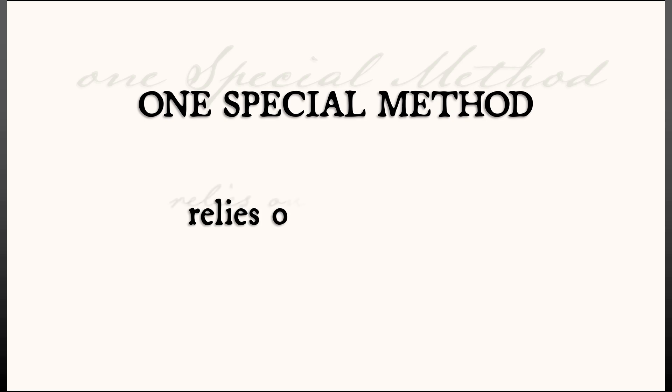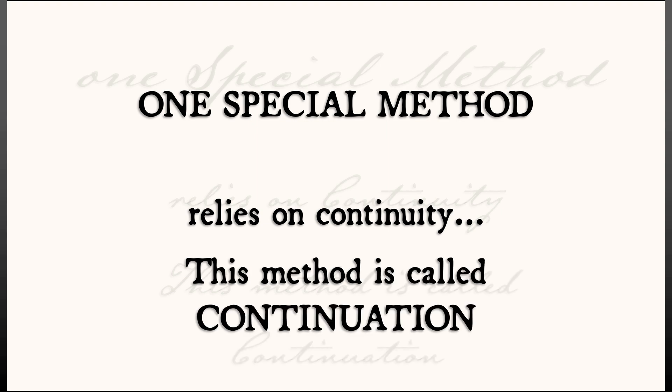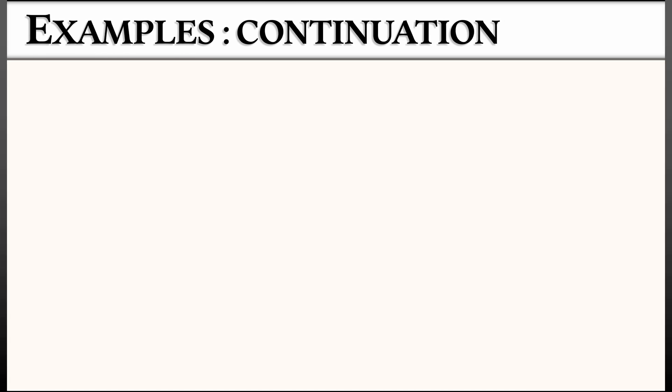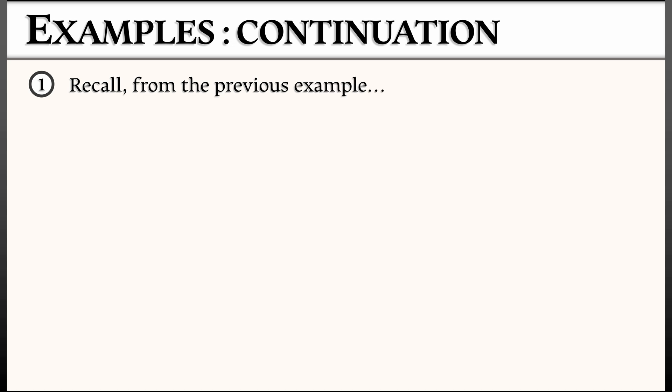In continuous time 1D dynamical systems, there's a great method for figuring out and classifying bifurcations in complex systems. This method is called continuation. Let's see how this works in the context of the example that we were just looking at.